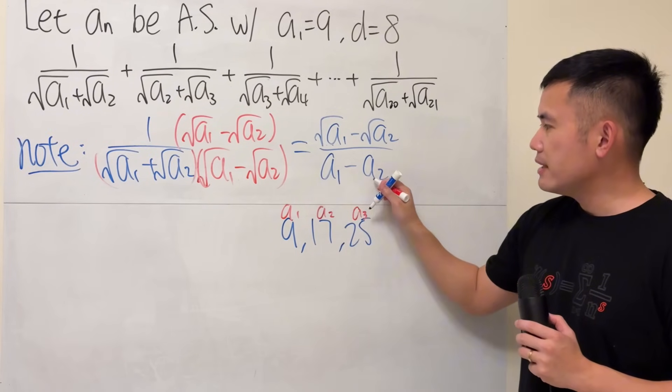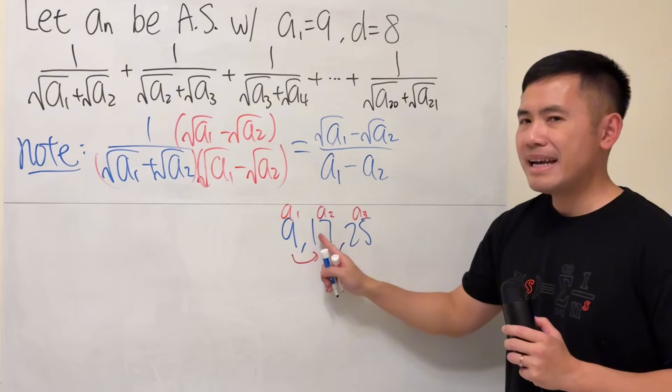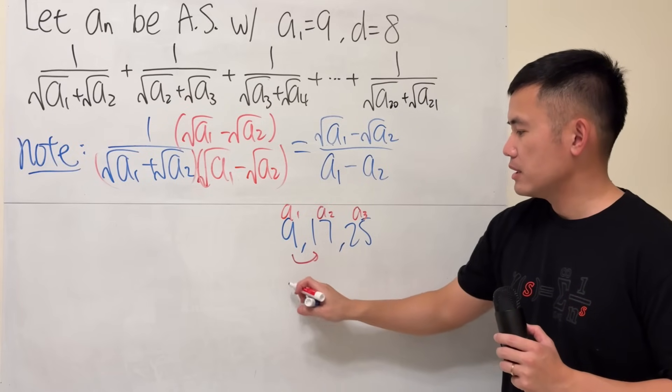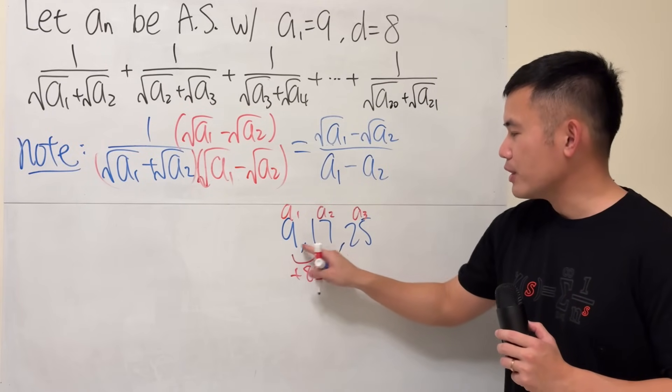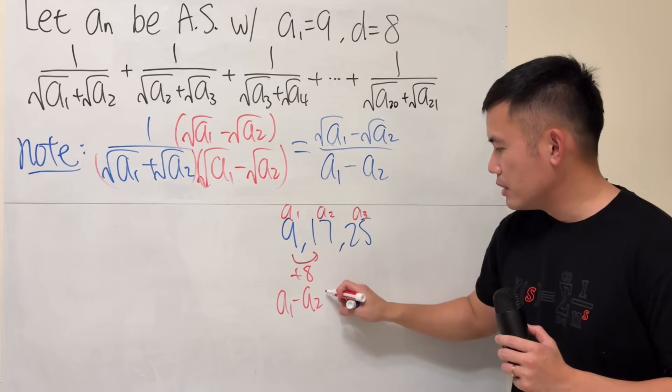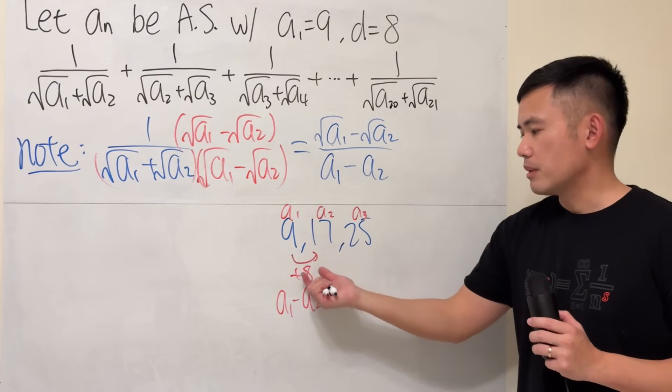If we do a1 minus a2, a1 minus a2, 9 minus 17, in this order, we actually get negative 8. Technically, we add 8 from here to here, but if we do a1 minus a2 is negative 8. It's just the negative common difference here.